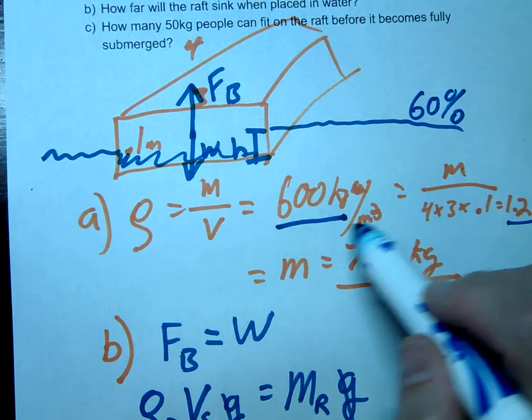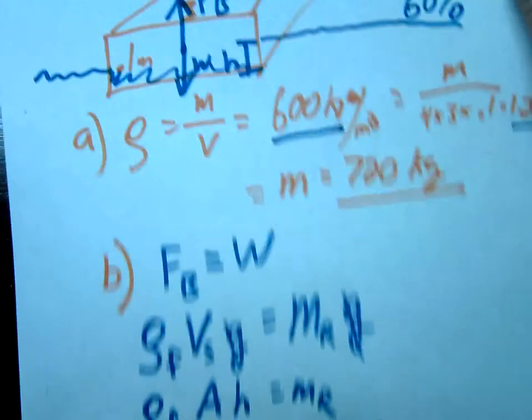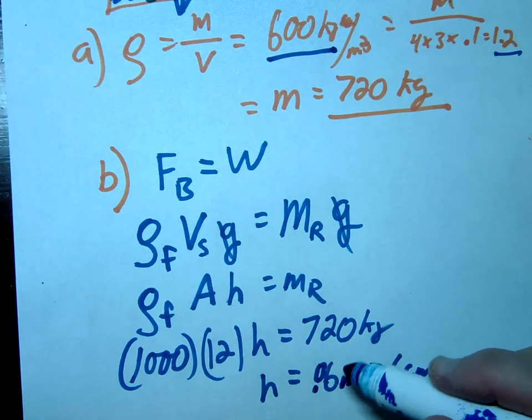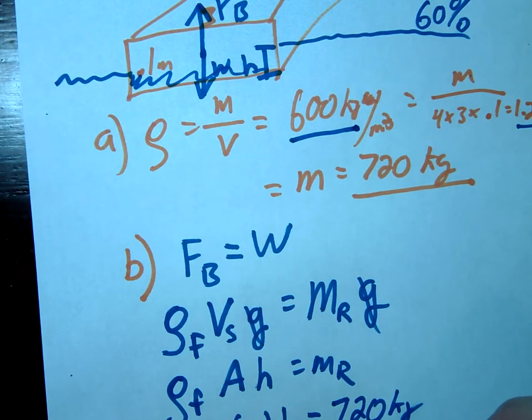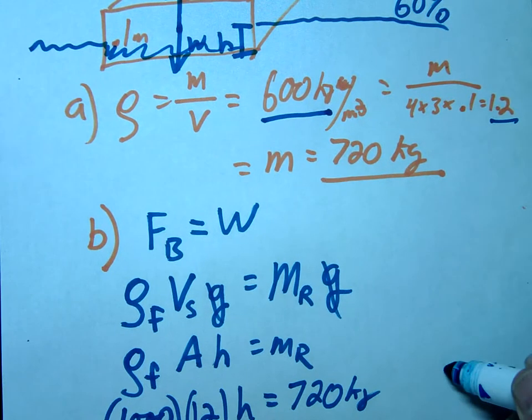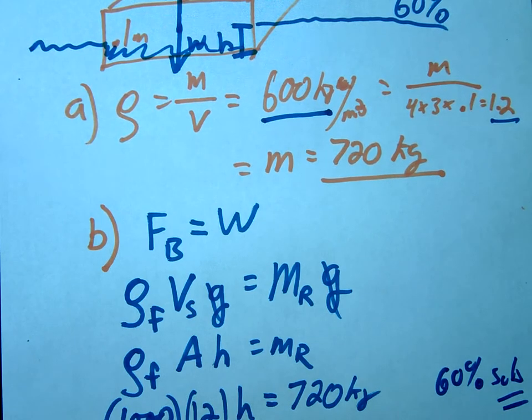Basically the density of the wood if you notice was 600 which is exactly 60% of the density of water, right? Density of water is 1000, and notice how much of the raft is underneath the water. The amount underneath the water it was 0.1 meters and it's 6 centimeters underneath the water, which means 60% is submerged. Interesting coincidence, probably not.